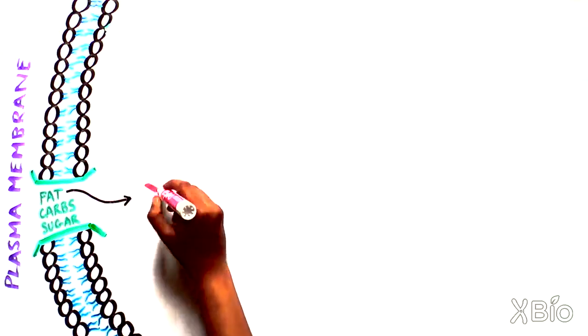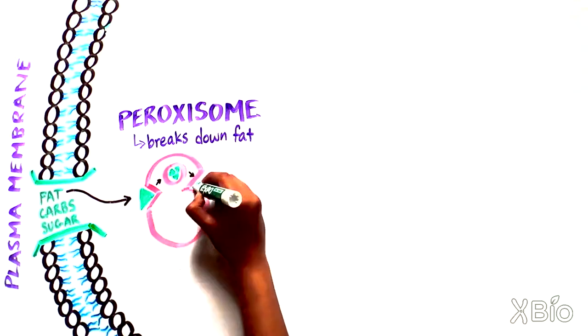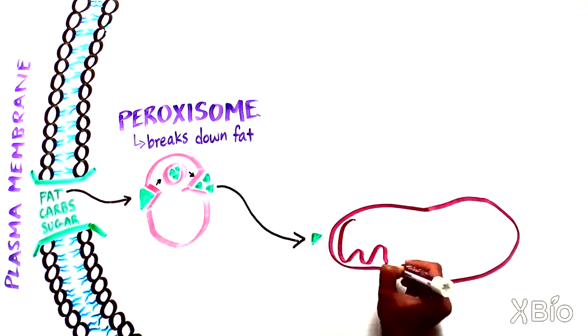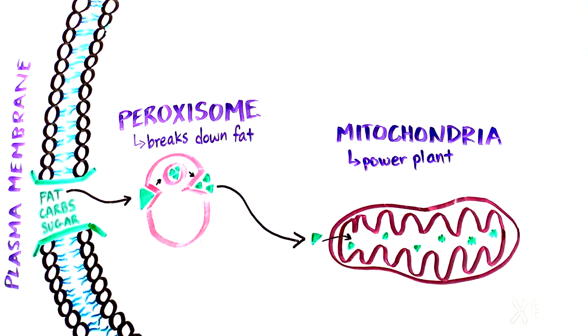Let's take fat as an example. The breakdown of fat is facilitated by peroxisomes, which pass the products to mitochondria. A mitochondrion is the power plant that takes a fuel derived from fat and converts it into ATP, the main energy currency that cells use for their own activities.